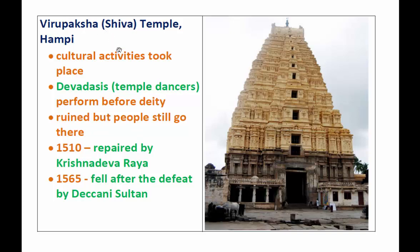In 1510 AD the temple was repaired by the ruler Krishnadevaraya. But in 1565 Hampi fell after the defeat of the Deccani Sultan — this was already mentioned when we studied the Sultanate of Delhi.